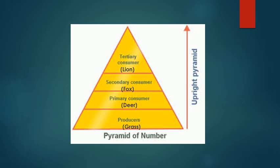The secondary consumers are eaten by the tertiary consumers, that is lion, which are much smaller in number as compared to the secondary consumers. This makes this pyramid an upright pyramid of number.